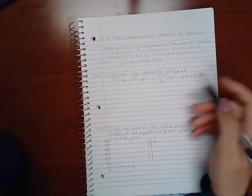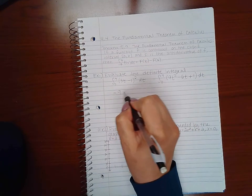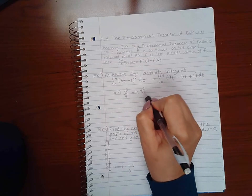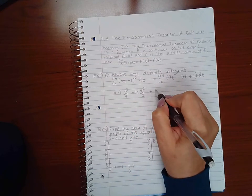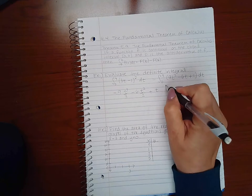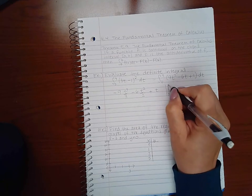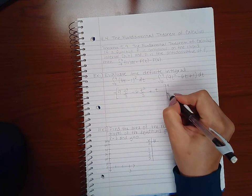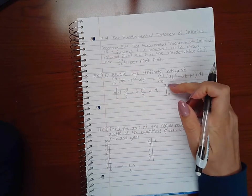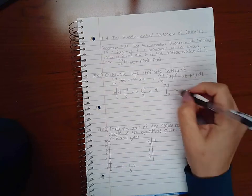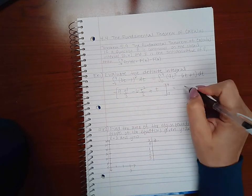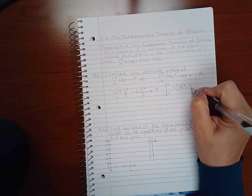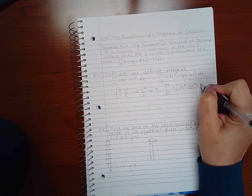Now I can integrate each piece. So I have 9t cubed over 3 minus 6t squared over 2 plus 1t. And this is the notation that I am going to use to tell myself I have to evaluate this entire expression from 0 to 4. Those are my bounds. Before I do that, I want to clean this up. So I am going to reduce this to get 3t cubed minus 3t squared plus t.